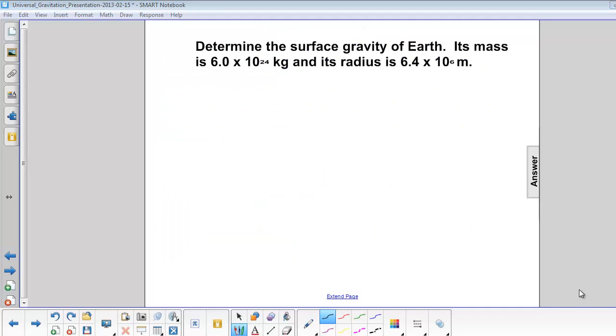Let's determine the surface gravity of the Earth. Its mass is 6 times 10 to the 24th kilograms, and its radius is 6.4 times 10 to the 6 meters. So surface gravity is g equals big G M over R squared.